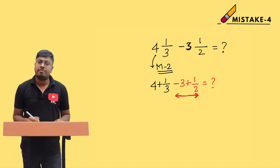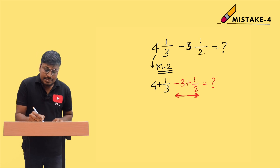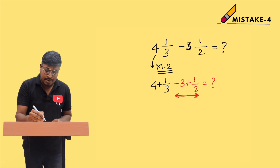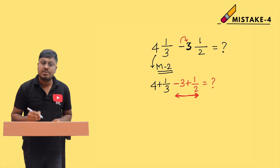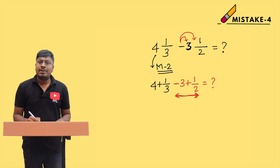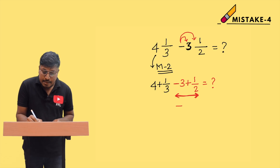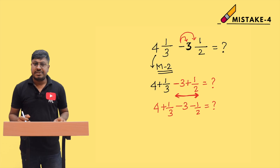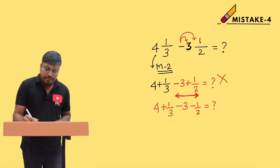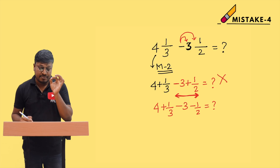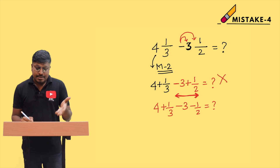The mistake is here: in minus 3 and 1/2, the minus sign is common for both the integer and the fraction. So this minus is common for 3 as well as for 1/2. Whenever you separate a mixed fraction with a leading minus sign, you must write it as minus 3 minus 1/2 — not minus 3 plus 1/2. So the correct separation is: (4 + 1/3) minus 3 minus 1/2.